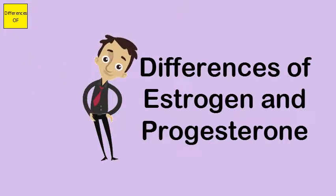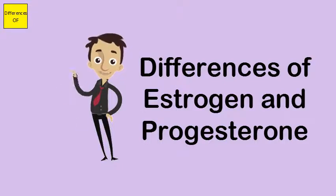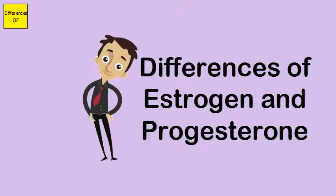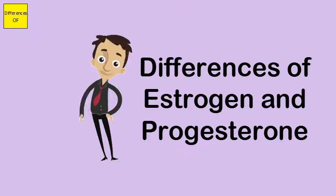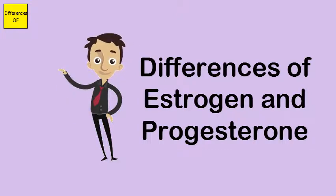Estrogen causes enlargement of the uterus and breasts. Progesterone induces growth of decidual cells, reduces contractility of the uterus, and stimulates growth of mammary glands.